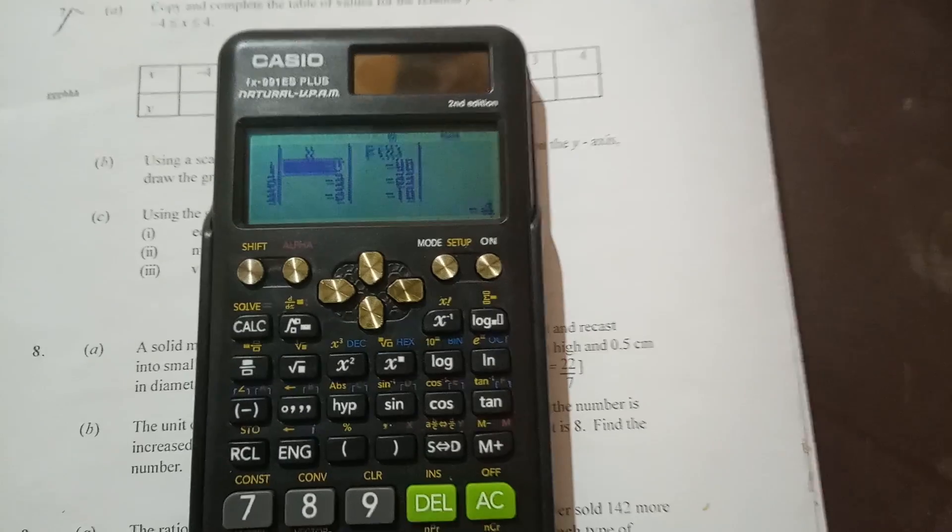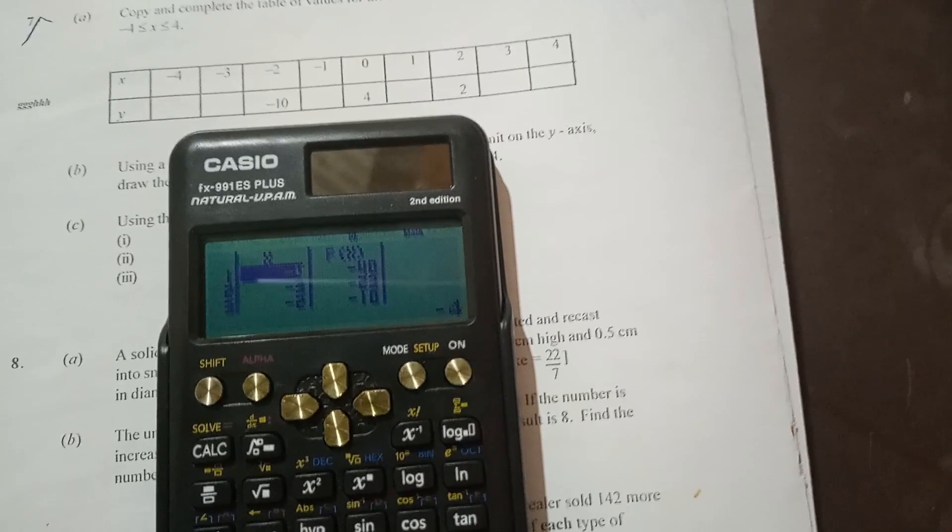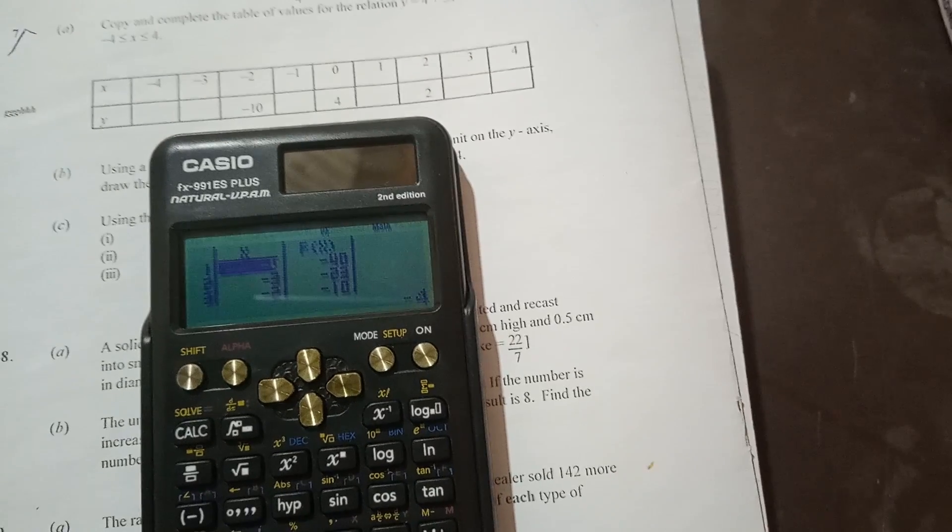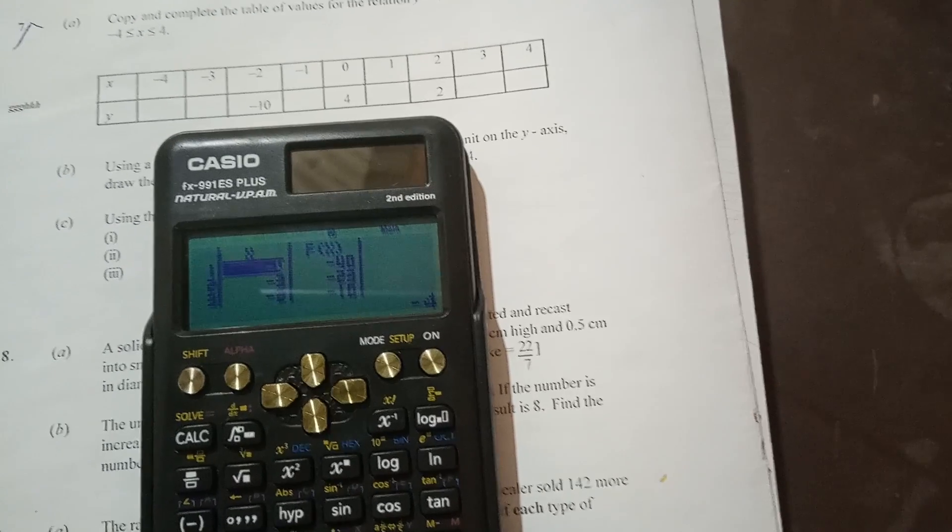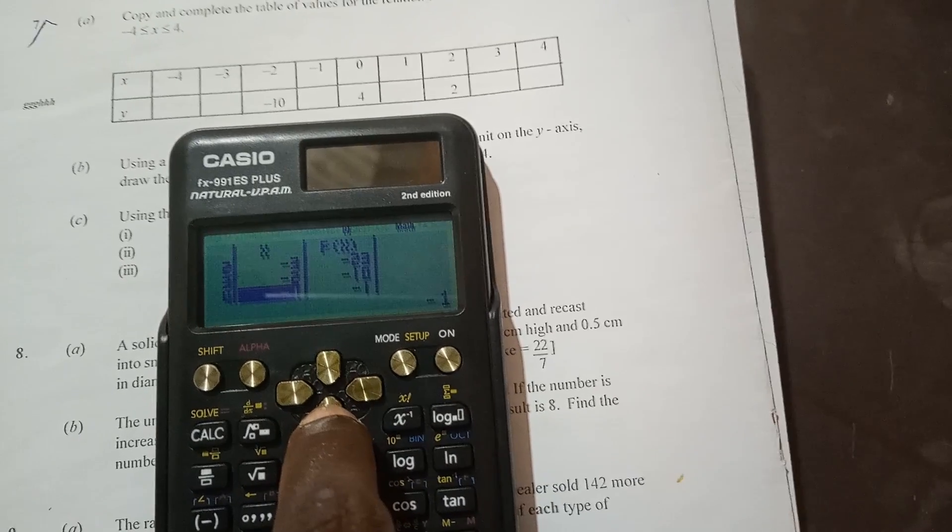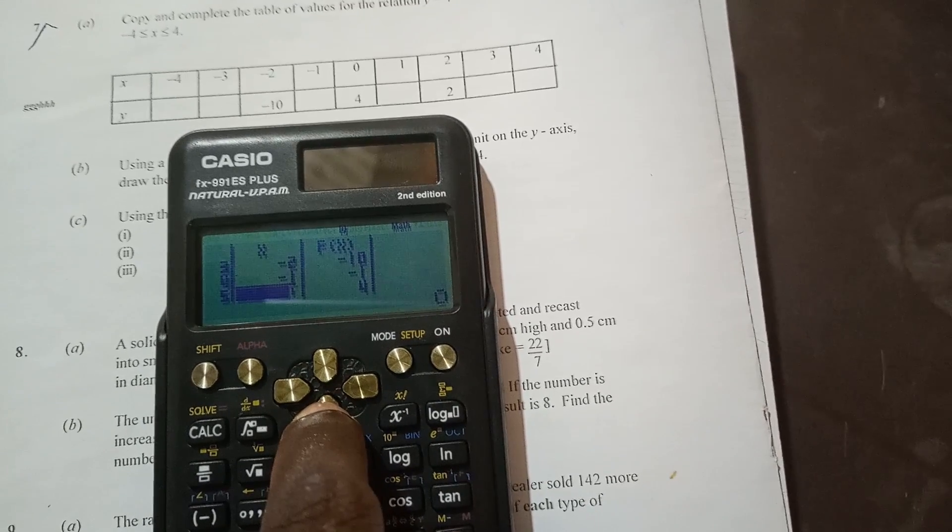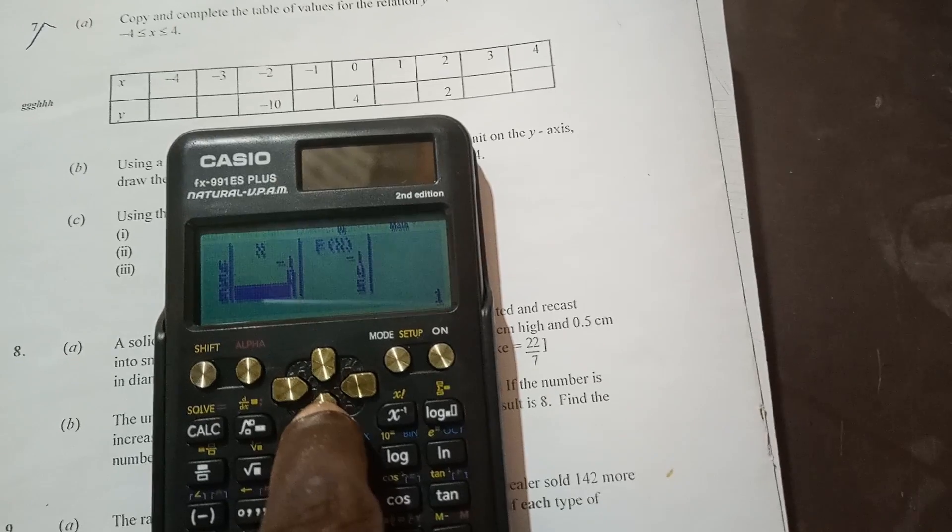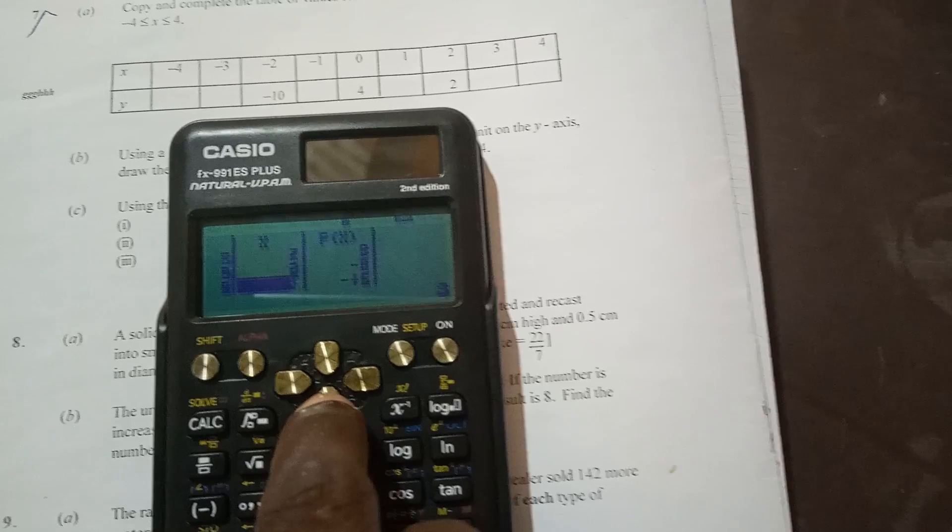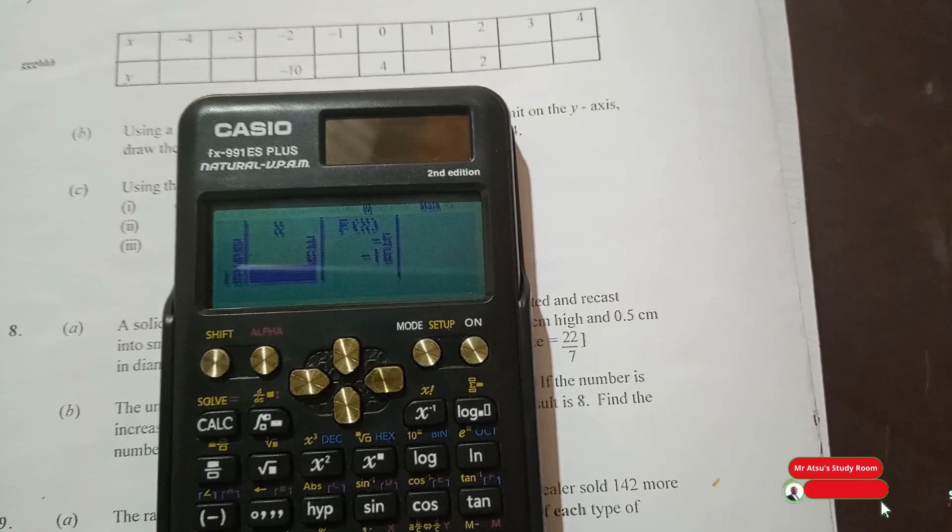So you can see our table has come with our answers already. For negative 4, our y value is negative 40. So you just write it under the negative 4. Negative 3, the corresponding y value is negative 23. Negative 2 is negative 10, which is already in the table. We need to press the cursor down to move the table up. Negative 1 is negative 1. 0 is 4, which is already there. 1 is 5. 2 is 2, which is already there. 3 is negative 5, and 4 is negative 16. This is how we complete the table for a quadratic function or relation.